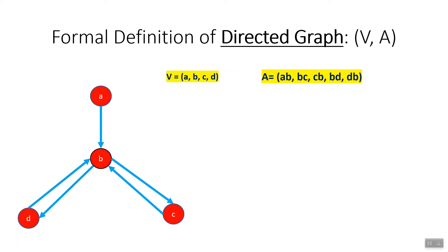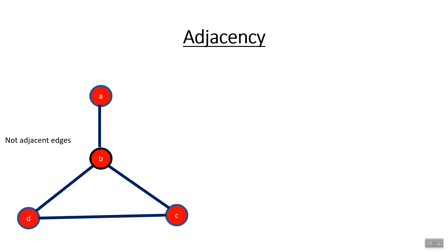For the directed graph shown, the set of vertices V contains vertices A, B, C, and D, while the set of directed edges A contains edges AB, BC, CB, BD, and BD. Now let's cover some terminology.